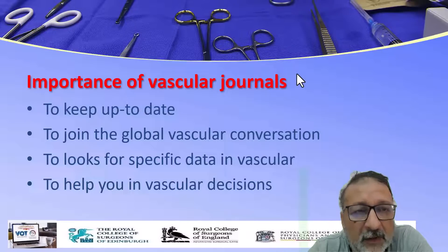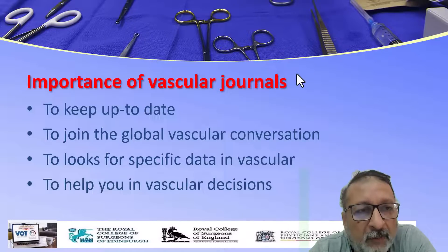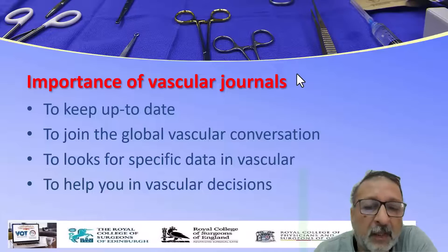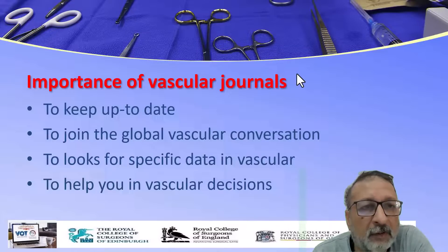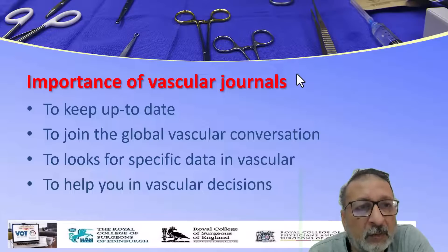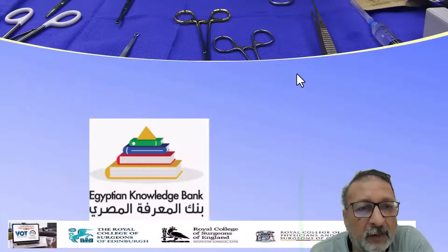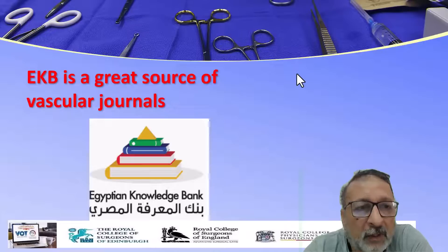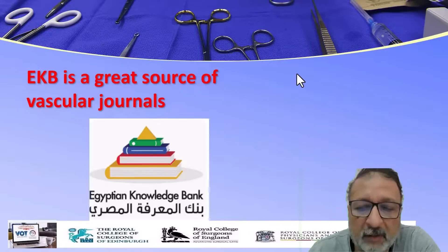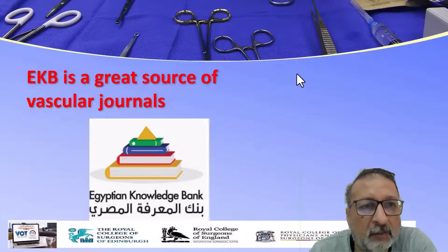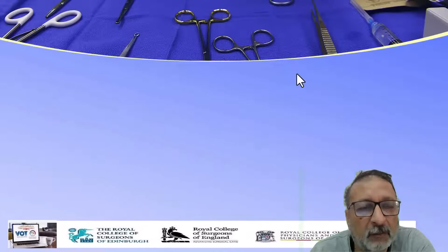I always advise all my vascular colleagues to have a glimpse of at least two vascular journals on a monthly basis. The first is the Journal of Vascular Surgery, and the second is the European Journal of Vascular and Endovascular Surgery. You need to shuffle quickly through them, see what is of interest to you, and read it. In many cases you should go weekly to review them. The Egyptian Knowledge Bank is one of the best sources for vascular journals.